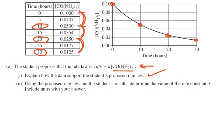Then, using the proposed rate law and the student's results, determine the value of the rate constant k. Okay, well, what you could do here is if it's a first order, then we have that really nice little special case of first order where the natural log of 2 is equal to k times the half-life, t1 half.